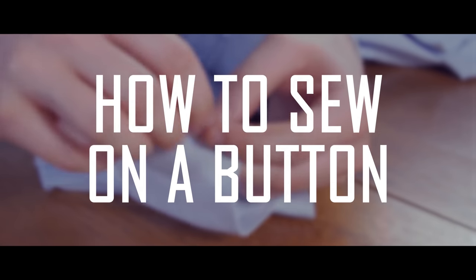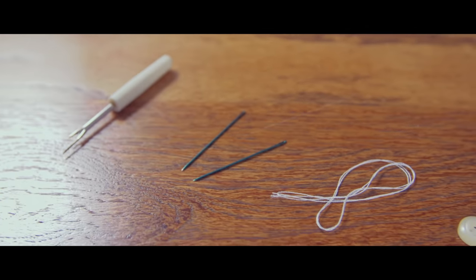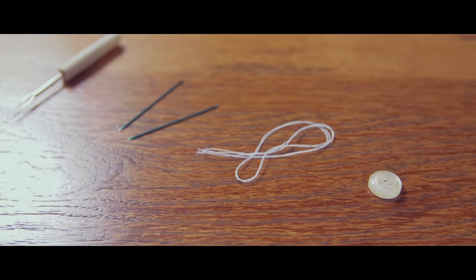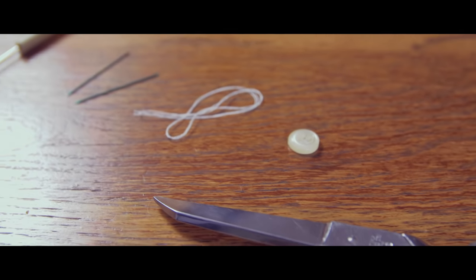To sew on a button, you'll need a seam ripper, two needles, 24 inches of thread, and an extra button if you've lost the original, and a pair of scissors.